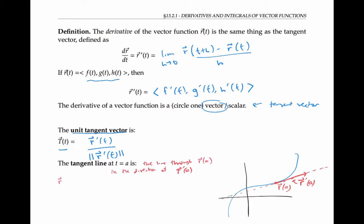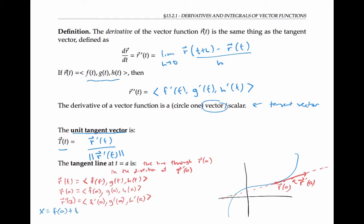If the vector function r of t is given in components, then the point r of a can be described in terms of those components at a, and the tangent vector r prime of a can also be described in terms of the derivatives of those components at a. So the line through this point with this direction can be given with parametric equations: x equals f(a) plus t times f prime of a, and y and z similarly. We can write the same thing more compactly with a vector equation — I'll call it w of t equals r of a plus t times r prime of a. The components of w are just the x, y, and z coordinates of the line.